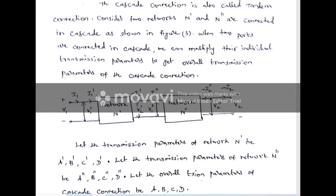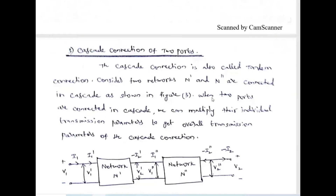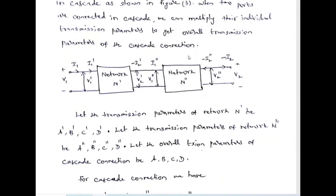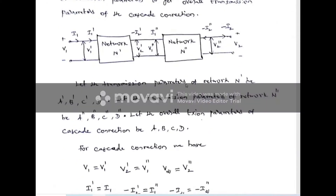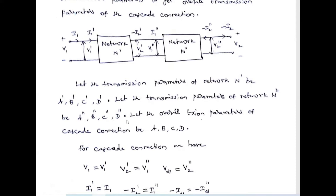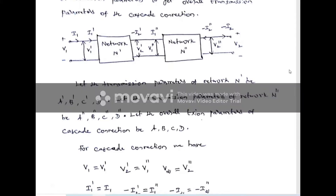Let us derive and prove this statement. Consider the transmission parameter of the first network N' as A', B', C', D', and the transmission parameter of the second network as A'', B'', C'', D''. The overall transmission parameter of this cascaded connection is ABCD.